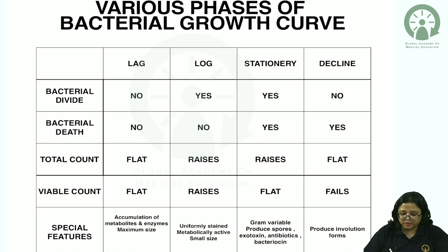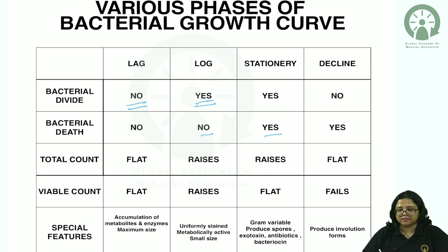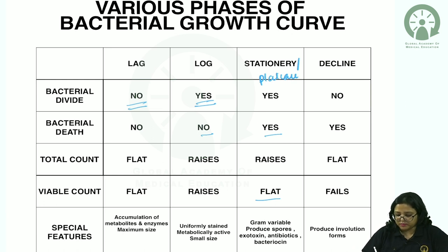Key points: bacterial division does not take place in the lag phase, and there is no bacterial death. In the log phase, bacteria divide, and towards the end, some bacteria die. In the stationary phase — also known as the plateau phase — there is a balance between cells dying and cells produced by binary fission. In the phase of decline, total count remains the same while viable count decreases.